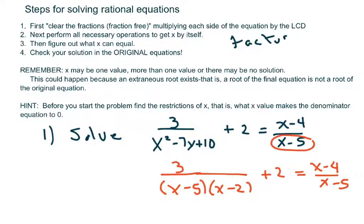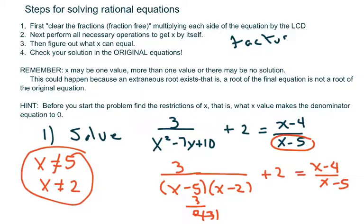Now what makes the denominator zero? Well, if we have x equals 5, then the denominator is going to be 3 over 0 times 3, which leaves 0, and you can't divide by 0, so x cannot be 5. Similarly, x cannot be 2. So if we get one of those two solutions, it can't be that.